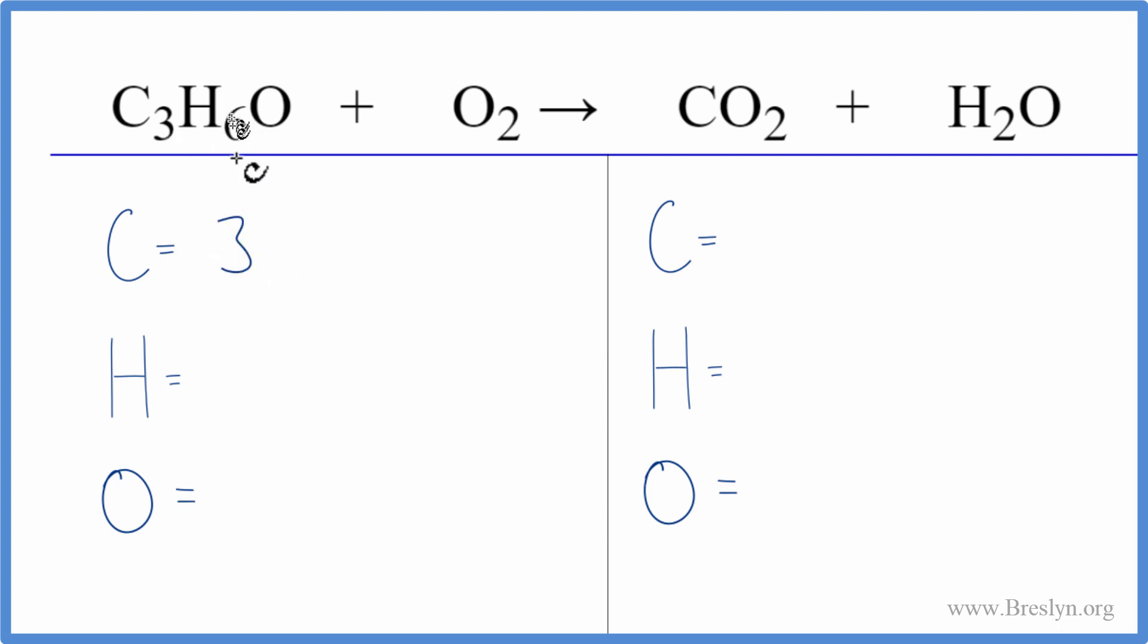We have three carbons, six hydrogens, and one oxygen, plus we have these two oxygens here with the O2. So now we have three oxygen atoms. On the product side we have one carbon, two hydrogens, two oxygens, plus we have this one oxygen here. So we have three oxygens as well on the product side.